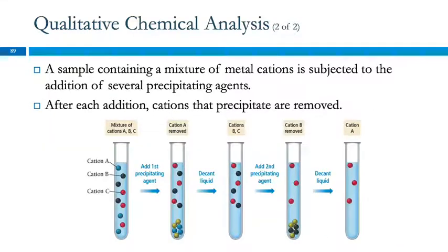The idea here is that you have a sample containing several different metal cations, and you carefully choose the reagents that you add to precipitate them out one at a time. In this example, we have a mixture of cations A, B, and C. We'll add a precipitating agent that will precipitate cation A, but not B and C. Now we have a solid with a liquid above, and the liquid contains the other two ions. We can decant, pour the liquid off, and now we have another test tube with just B and C ions. We'll add a second precipitating agent to get rid of cation B. We decant, and now we've got cation A separated from the other two.